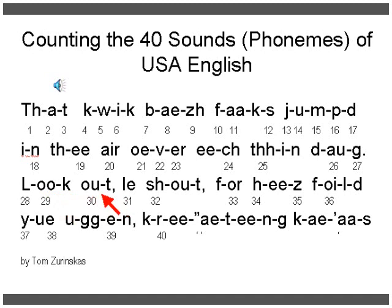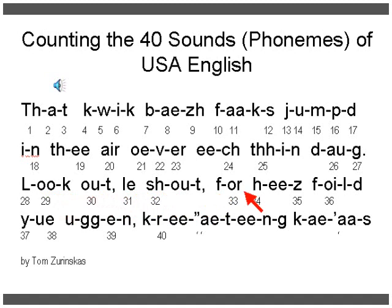Out — O-U is a typical spelling for the 'ow' sound in English. Here we have the capital I standing for the long I, and we bring the silent E over — that's how you spell the I sound. Shout — S-H is a very typical spelling of the 'sh' sound. For — here you have a vowel influenced by the letter R; it's not quite a long O or a short O, so we call that one phoneme.